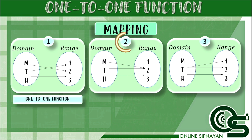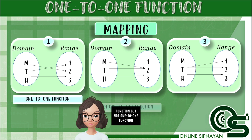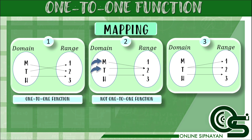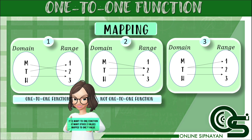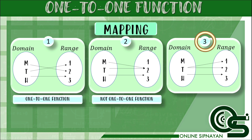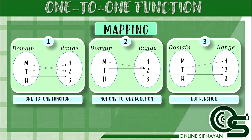For number 2, it is also a function. Let's check if it is also a one-to-one function. As you can see, the element 2 from the range corresponds to two elements m and t from the domain. It means that it is not a one-to-one function. Since there are two elements from the domain that correspond to one element from the range, it is also known as a many-to-one function. For number 3, the element m from the domain has no pair. It means that it is not a function, and therefore also not a one-to-one function.